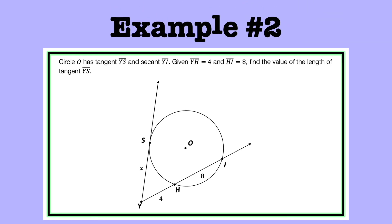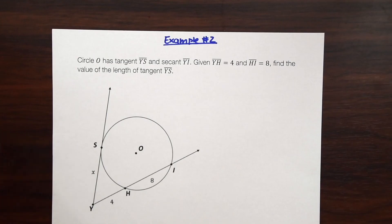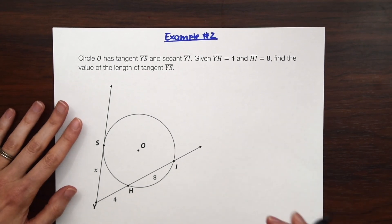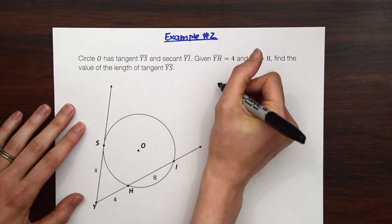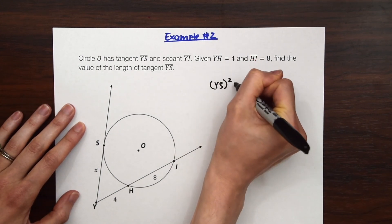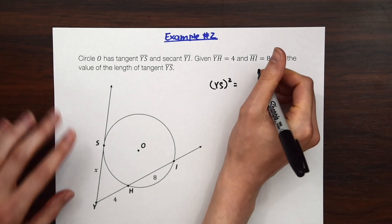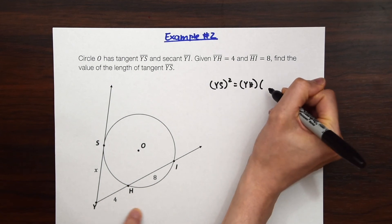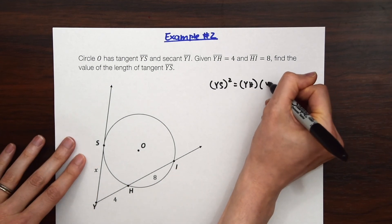Circle O has tangent YS and secant YI. Given YH is 4 and HI is 8. Find the value of the length of tangent YS. So again we need to find the tangent. This time we're given a little bit of different information but we can still find the answer. So we have tangent YS squared is equal to the first part of the secant YH times the entire secant YI.